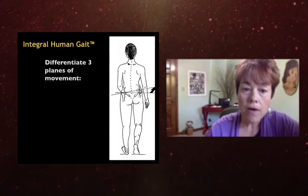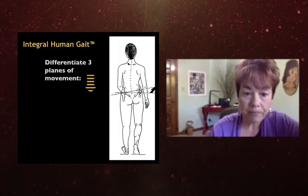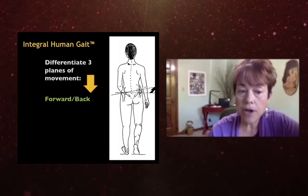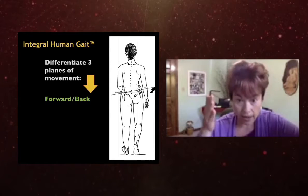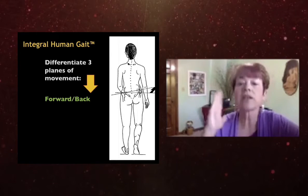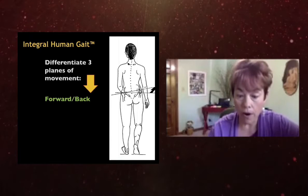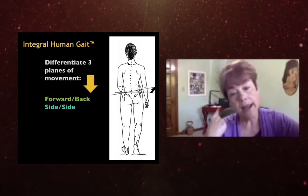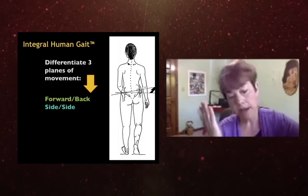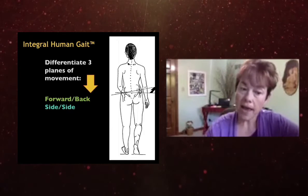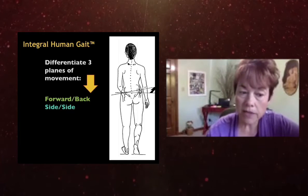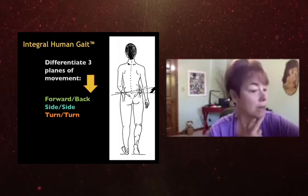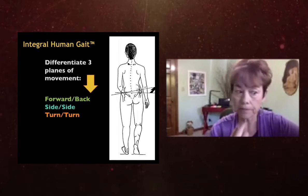These movements — first, forward and backward — you would know this as if my head was moving in the direction of nodding yes, or side to side as though my head could tilt from ear to shoulder. The third plane of direction would be turning, like turning right and left, like my head nodding no.